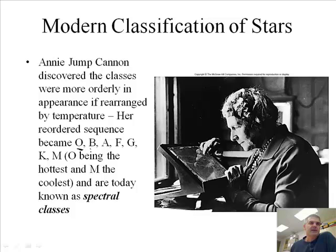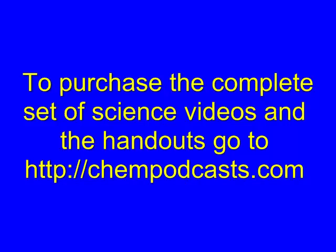So instead of A through N, she decided that the letters would be totally out of order. Now I wish they would have rechanged the orders, but these have to do with their temperatures. So we put them by coldest to hottest, where O is the coldest, I believe, and M is the hottest. I might be backwards on that, but I think that's correct.